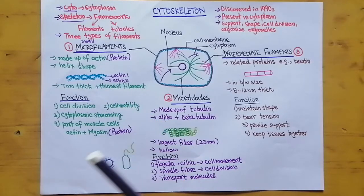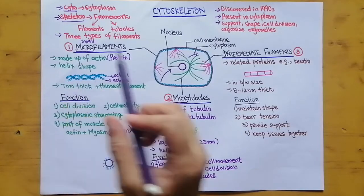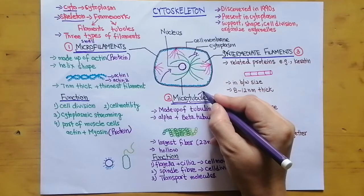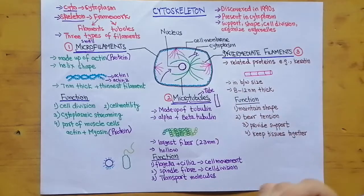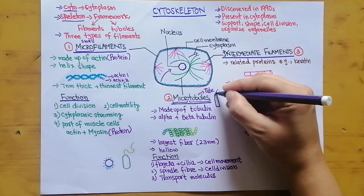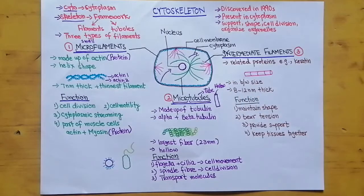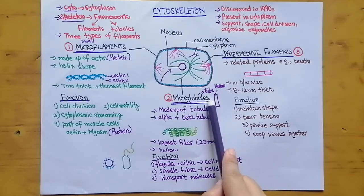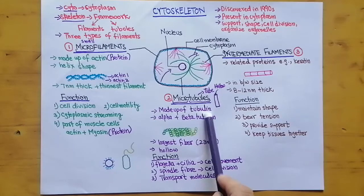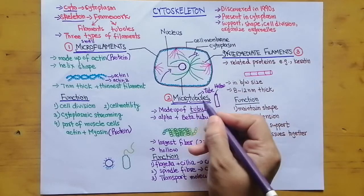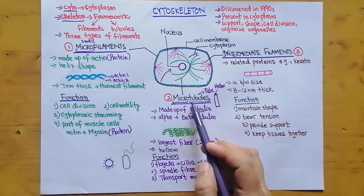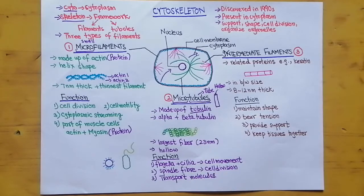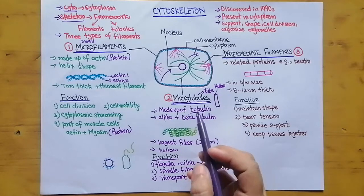The second filament type is microtubules. The word micro means small, and tubules comes from the word tubes. Tubes are cylindrical and hollow from the inside — similarly, microtubules are also hollow. They are made up of tubulin protein. The words tubulin, tubules, and tube all share the same origin, making it easy to remember.